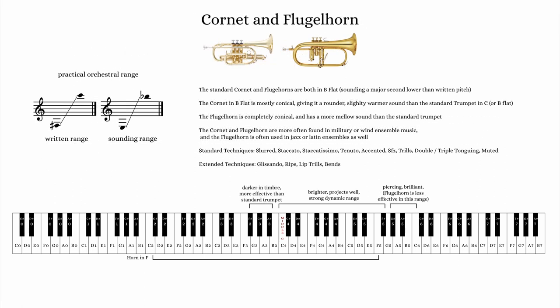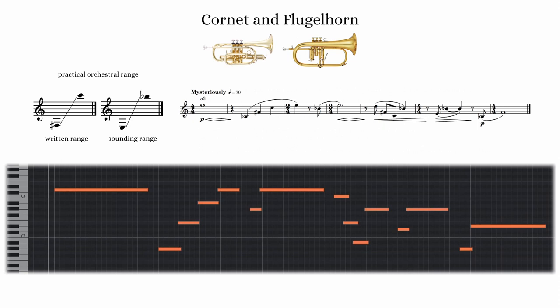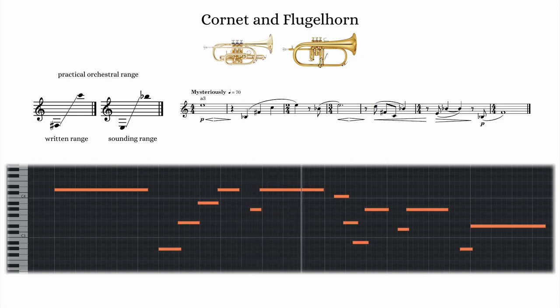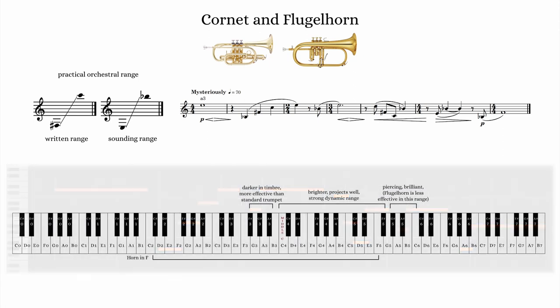I'd love to demonstrate either the cornet or the flugelhorn using sample libraries, but unfortunately Orchestral Tools has yet to release a solo version of either one. They do, however, have an ensemble patch of three flugelhorns, which will give you a sense of the warmer timbre of the conical instrument. Other than timbre, both the cornet and flugelhorn are very similar to the standard trumpet, and most professional trumpet players would have no problem switching back and forth between them.